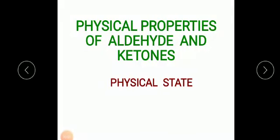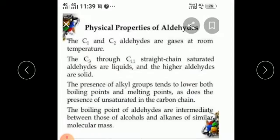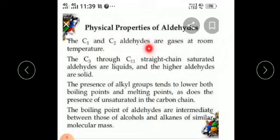Good morning students. Now we are going to see Unit 12: physical properties of aldehyde as well as ketone. The first point is physical state. Formaldehyde is a gas at room temperature and acetaldehyde is a volatile liquid. All other aldehydes as well as ketones up to C11 are colorless liquids. C1 and C2 aldehydes are gases at room temperature, and up to C11 straight chain saturated aldehydes are liquids. Higher aldehydes are solids.